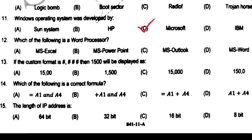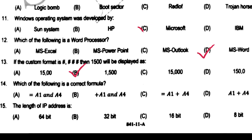Which of the following is a word processor? MS Word. If the custom format is #,###, then 1500 will be displayed as 1,500.